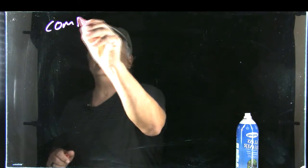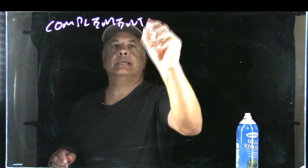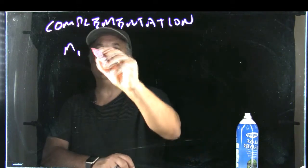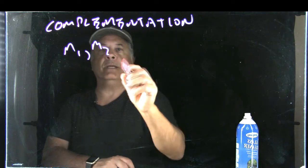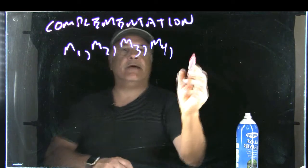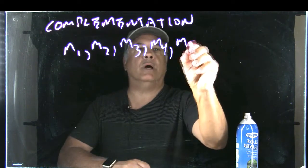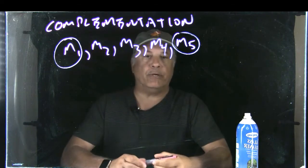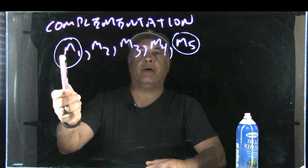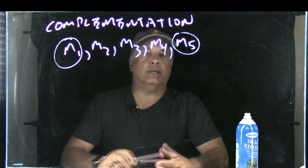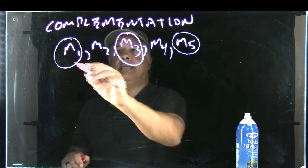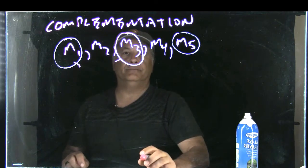We saw that mutation one and mutation five complemented each other, and that told us they were in different genes. The fact that they complemented each other said they were in separate genes, because in the mutant one line, wild-type function for gene B was provided, and in the mutant five line, wild-type function was provided for gene A. Now let's imagine that mutant three is in the same gene as mutant one — that is, also in gene A.